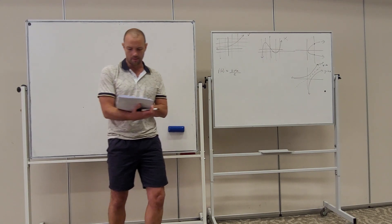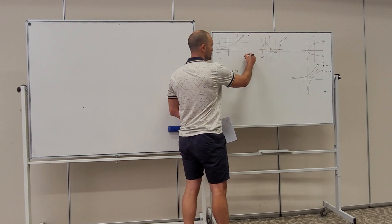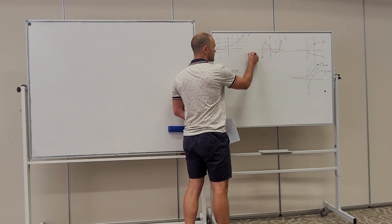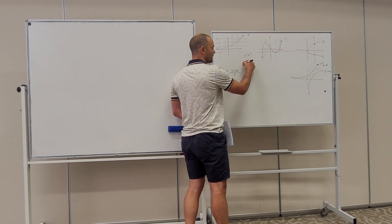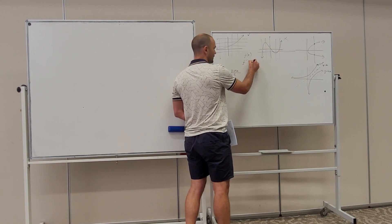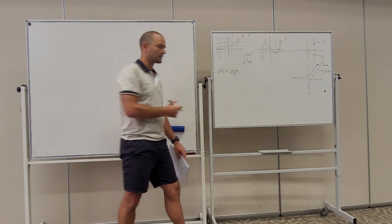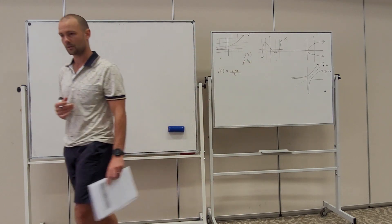As far as notation goes, if we use f of x to describe the function, then the inverse is f minus one of x. That's going to be the inverse function.